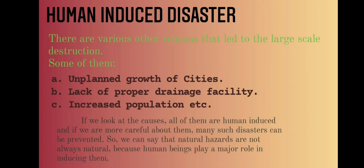Unplanned growth of cities means most people from villages have migrated and started living in cities and towns, where people are not planning which resources will get exhausted as they settle in a particular place. Lack of proper drainage facility — sanitation plays a vital role in development. When people do not have proper drainage, water mixes with fresh drinking water, creating health hazards. When there is a sudden downpour, if the drainage system is not proper, it can create havoc in the city.